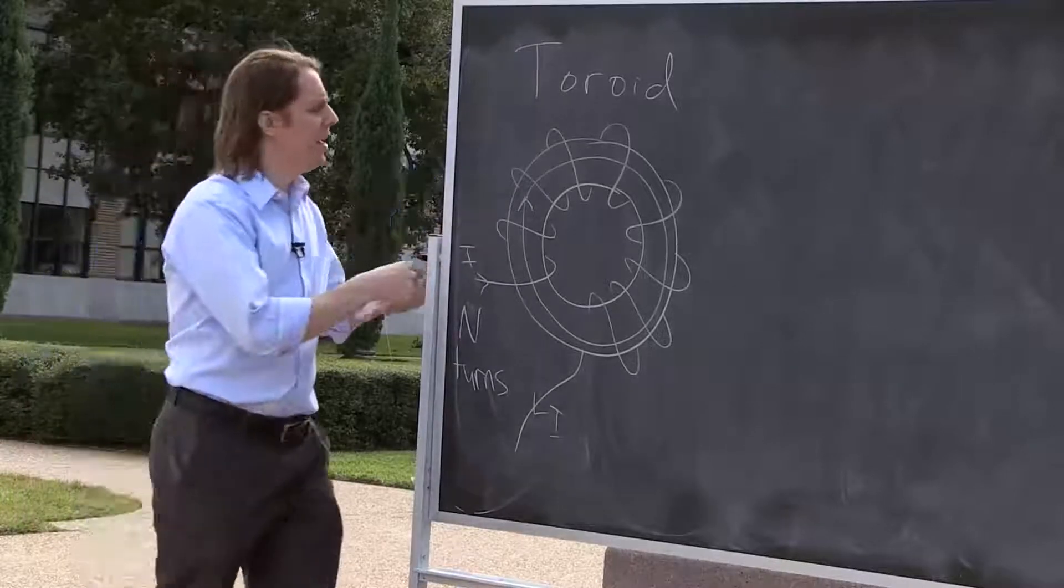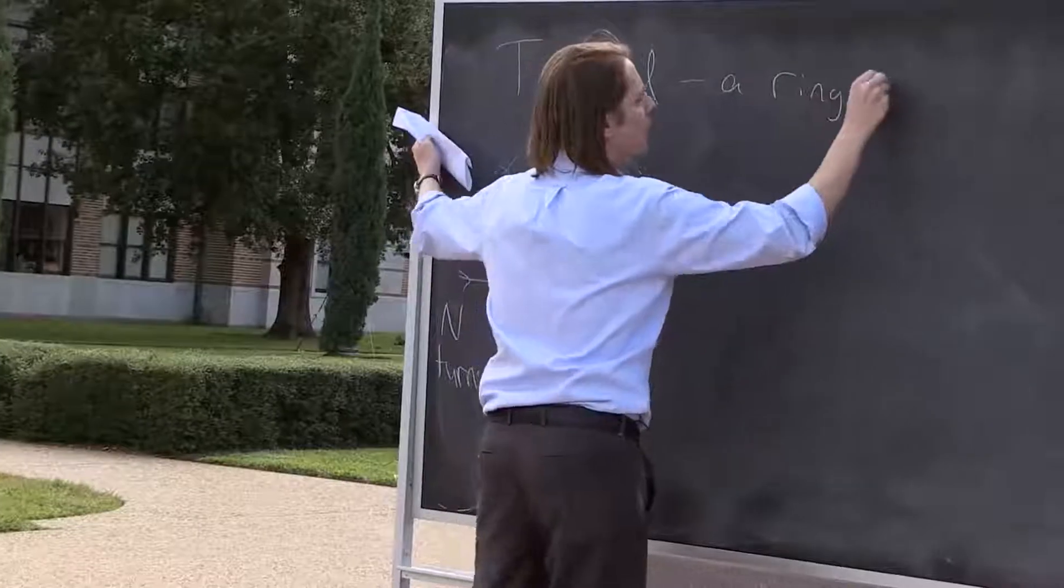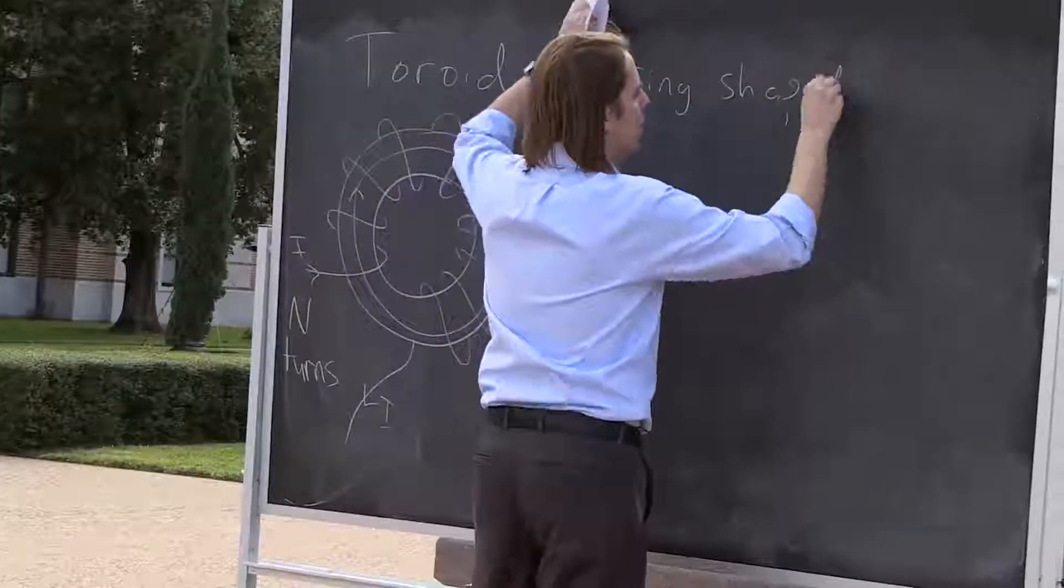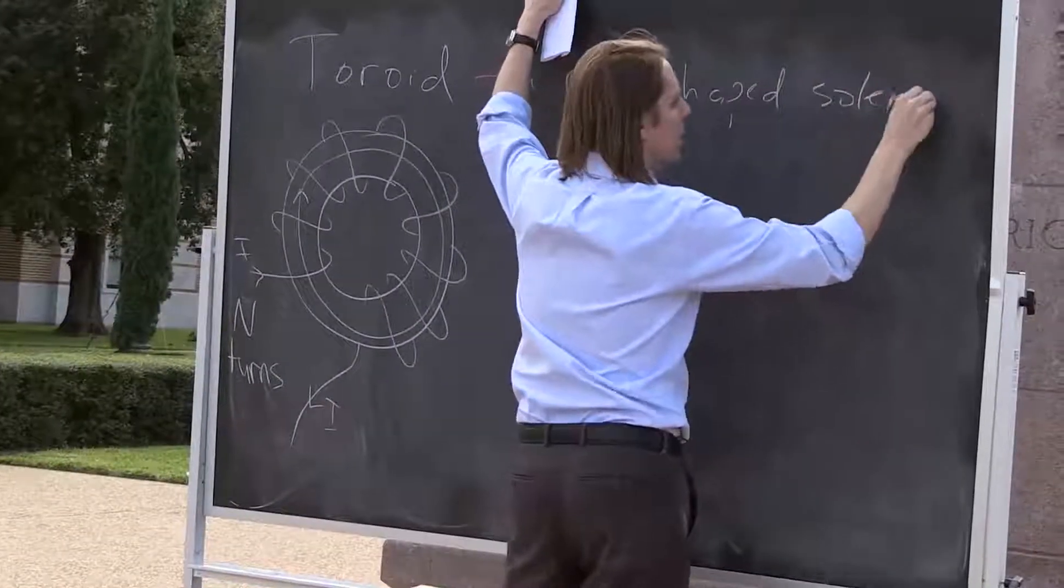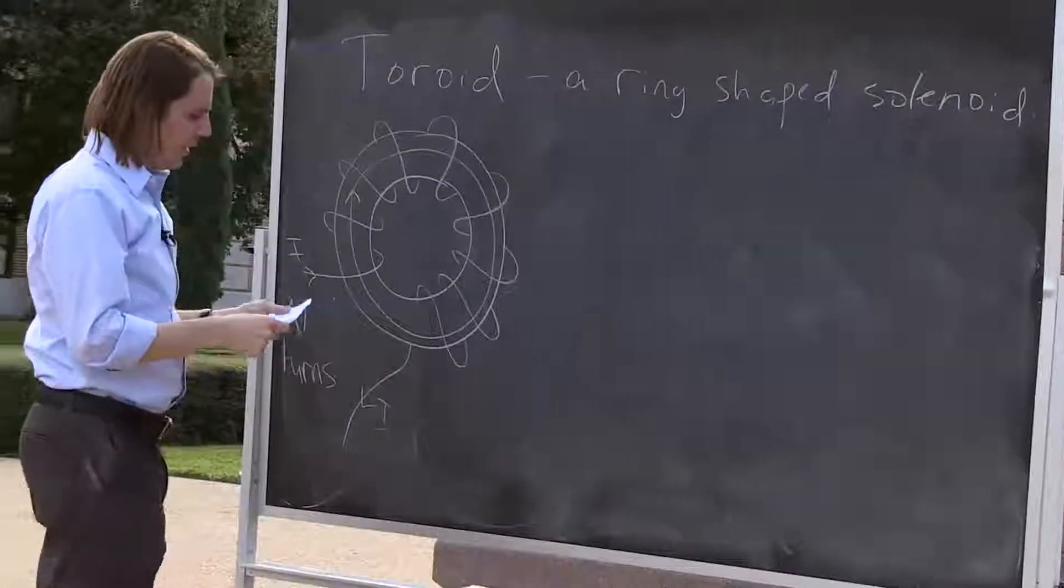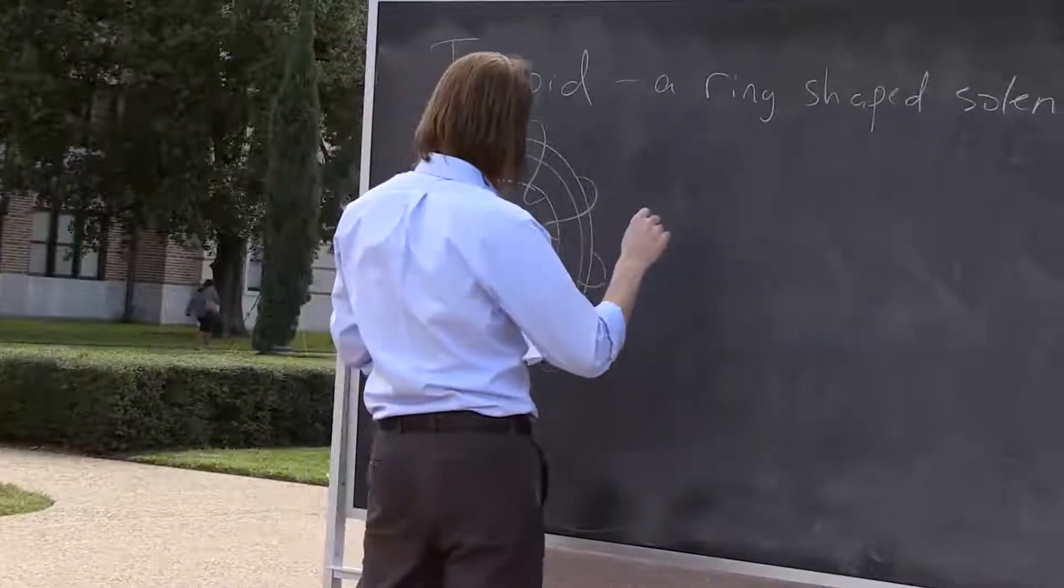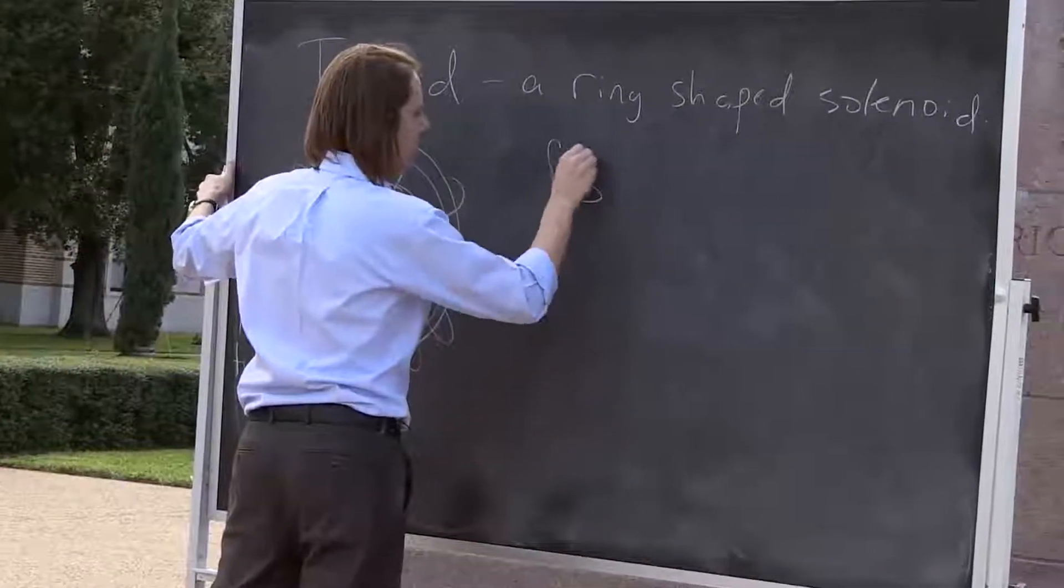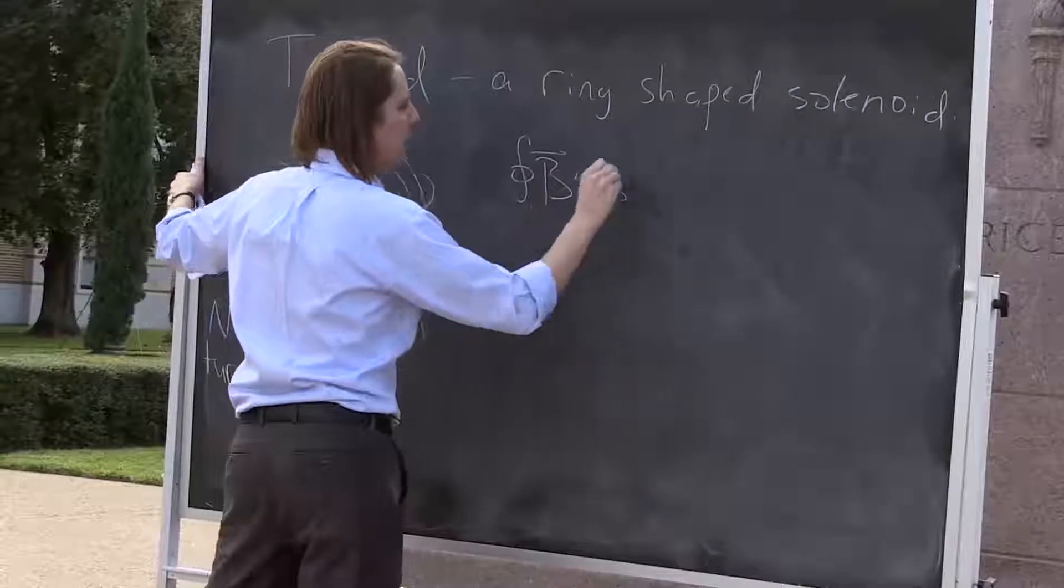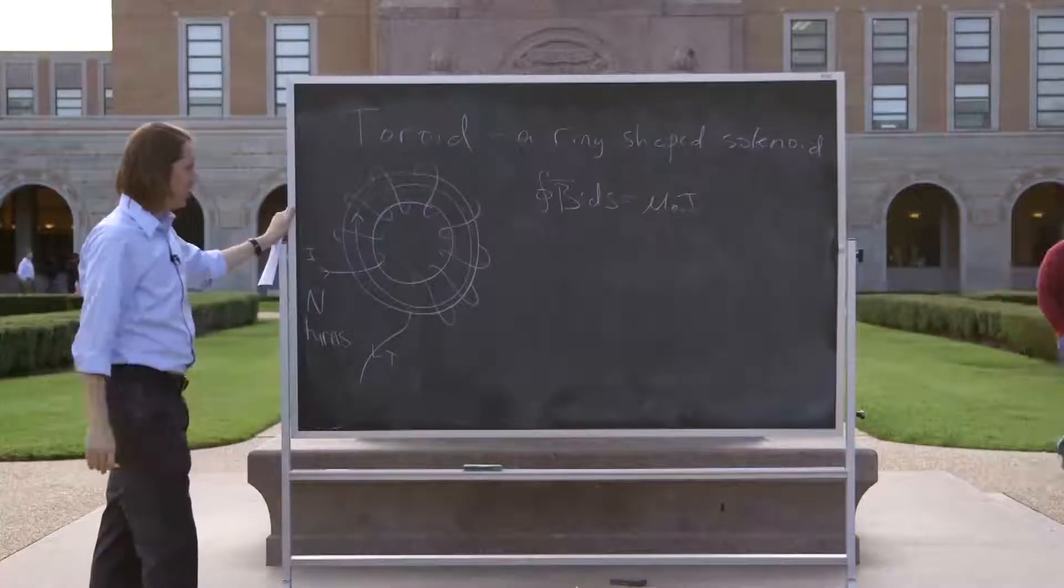So let's define it. It's a ring-shaped solenoid. And let's apply Ampere's Law. So the integral of B dot ds equals μ₀ times I.